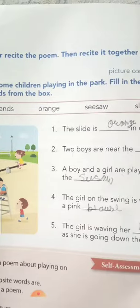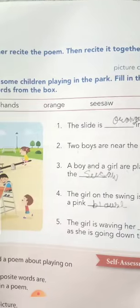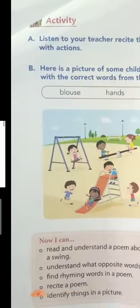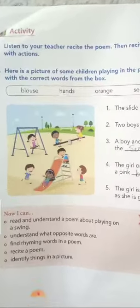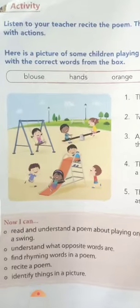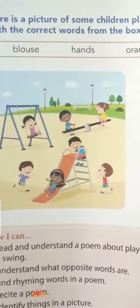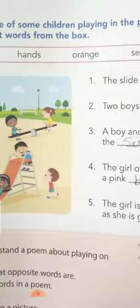The girl on the swing is wearing a pink dash. Jo girl kya pahini hai? Ek blouse — pink color ki blouse pahini hai. The answer is blouse.